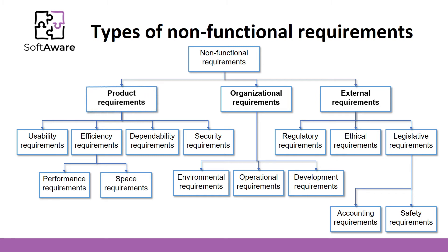Product requirements specify how the delivered product must behave, including execution speed, reliability, and others. Organizational requirements are based on organizational policies and procedures, for example process standards, implementation requirements, and so on.